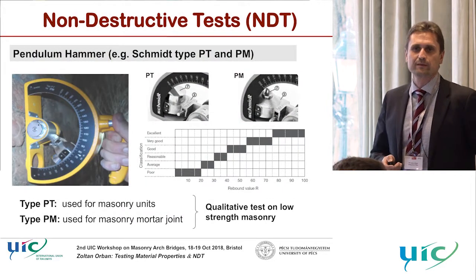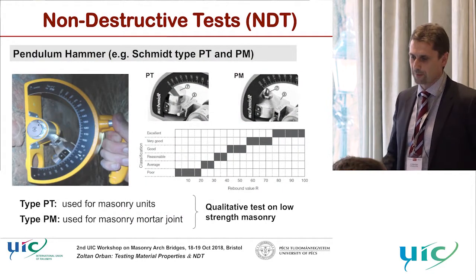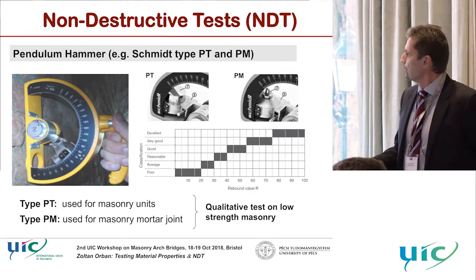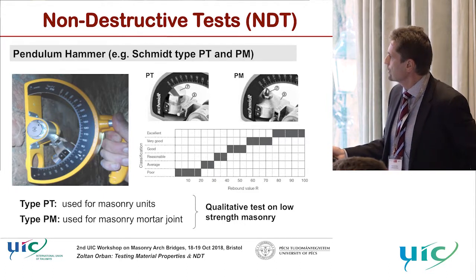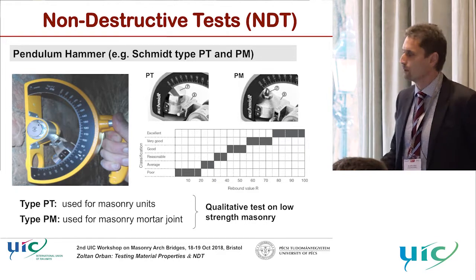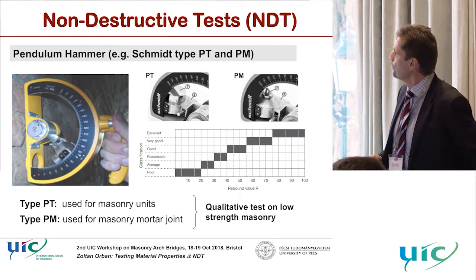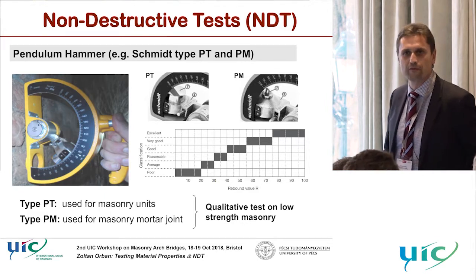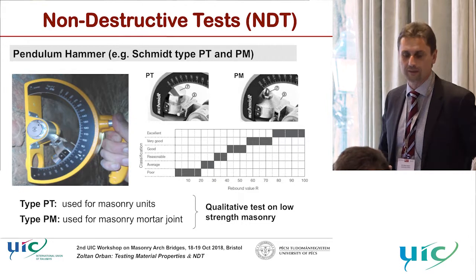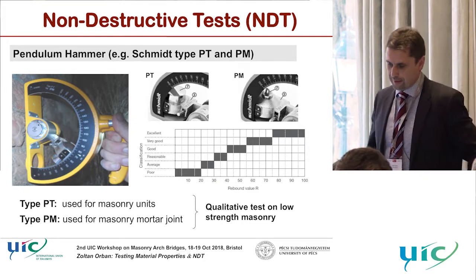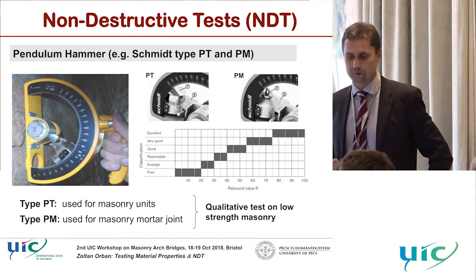Among NDT methods, there is the pendulum hammer, which can give only a qualitative approximate value for strength. We can get results on the masonry units and on the strength of masonry joints. There is a different head for the equipment, but I want to emphasize that results are only very approximate — only qualitative results can be obtained.